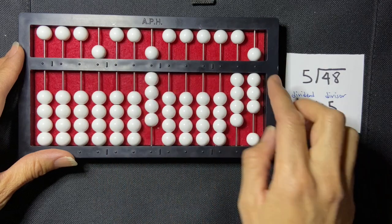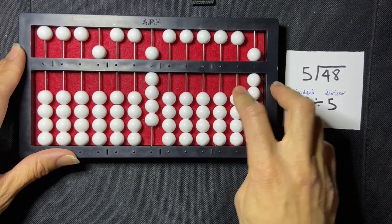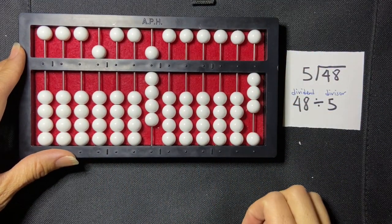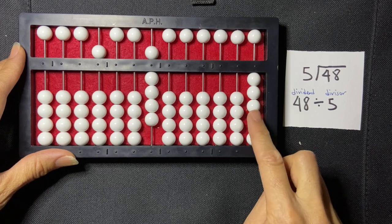9 times 5 is 45, so I'm going to subtract 45, and I can do that directly, and I'm left with a remainder of 3 here.